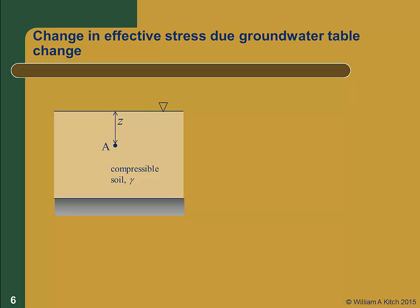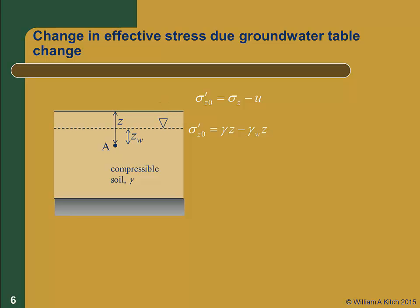Now, let's consider the case where the groundwater table changes. Unlike our previous two examples, in this case the change in effective stress will be due to the change in pore water pressure rather than the change in total stress. We'll start with the same soil profile as our previous example, and the initial effective stress will be the same. Now, let's assume that the groundwater table in the area permanently drops to some new lower level, at a height of ZW above point A. This could be due to pumping of the groundwater from nearby wells, or a change in climate.